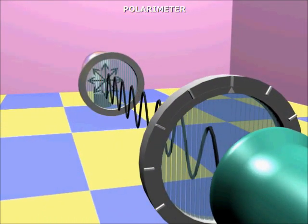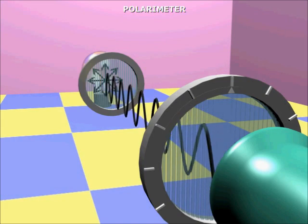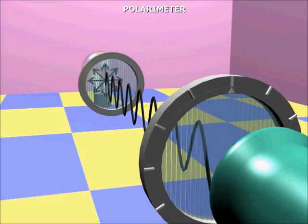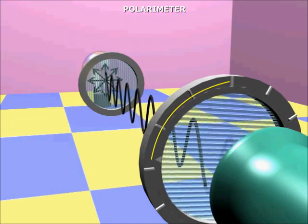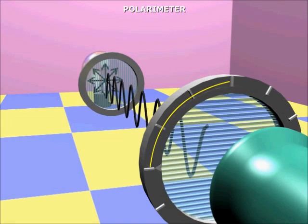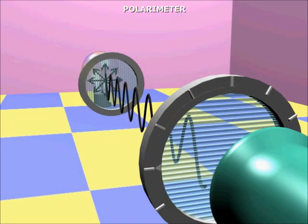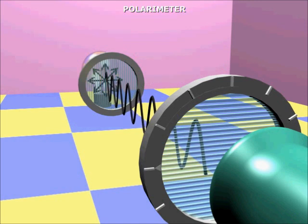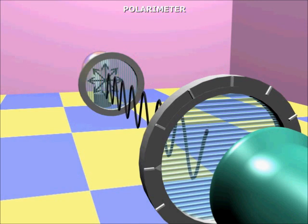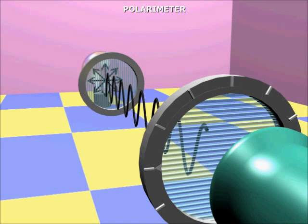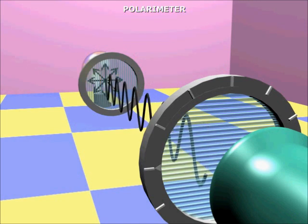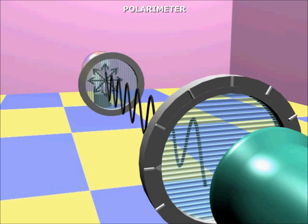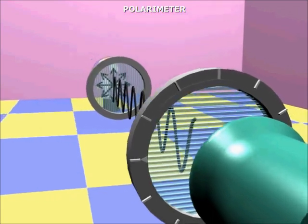Now this polaroid filter of the analyzer is rotated through an angle of 90 degrees, such that the molecular alignment of the filter material becomes perpendicular to the plane of polarized light. The result is that this wave is also blocked by the analyzer and we see darkness in the eyepiece.